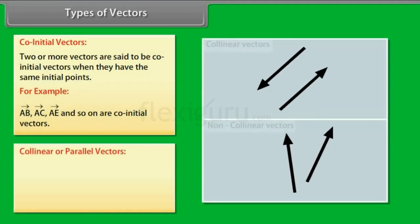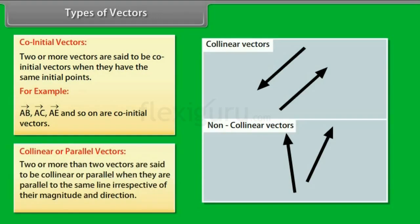Co-Linear or Parallel Vectors: Two or more than two vectors are said to be co-linear or parallel when they are parallel to the same line irrespective of their magnitude and direction.